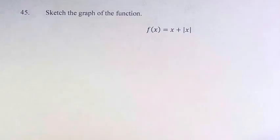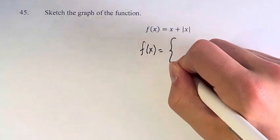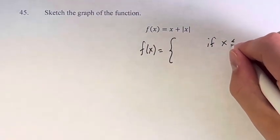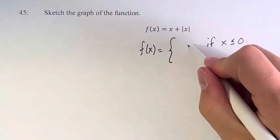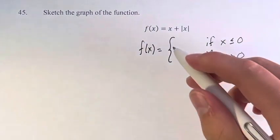So what we're going to do to graph this is actually turn it into a piecewise function. If x is less than or equal to 0, this function is going to have a certain value. And if x is greater than 0, it's going to have a different value.